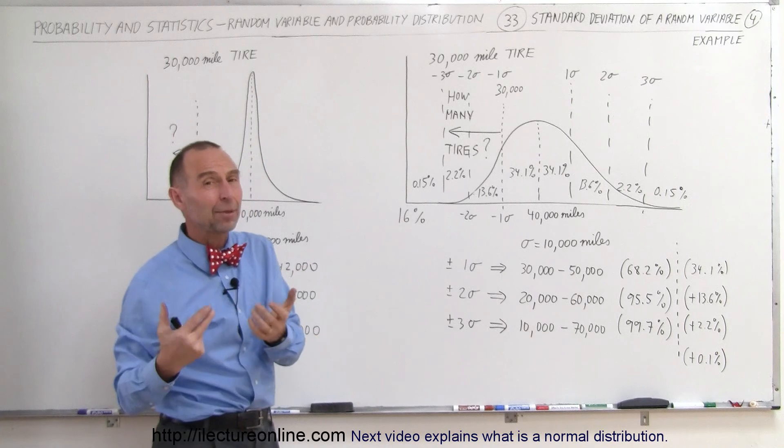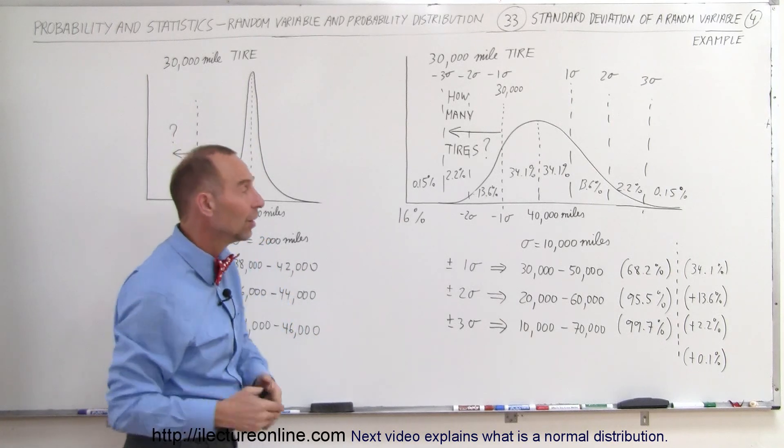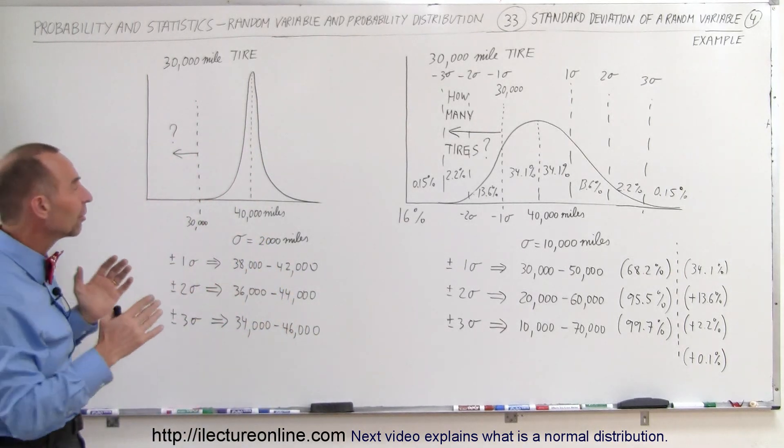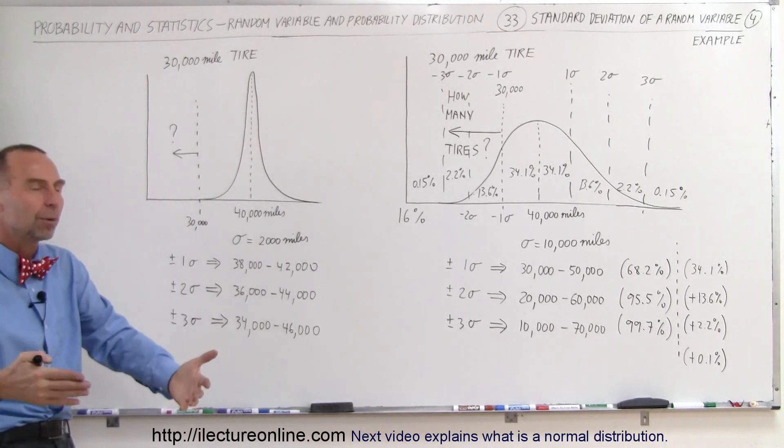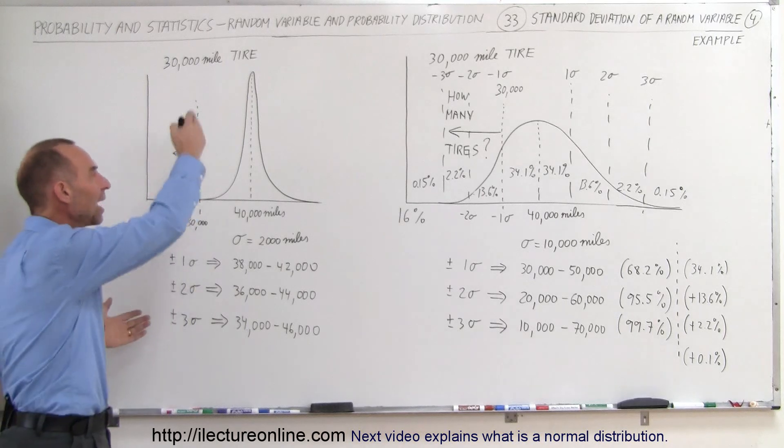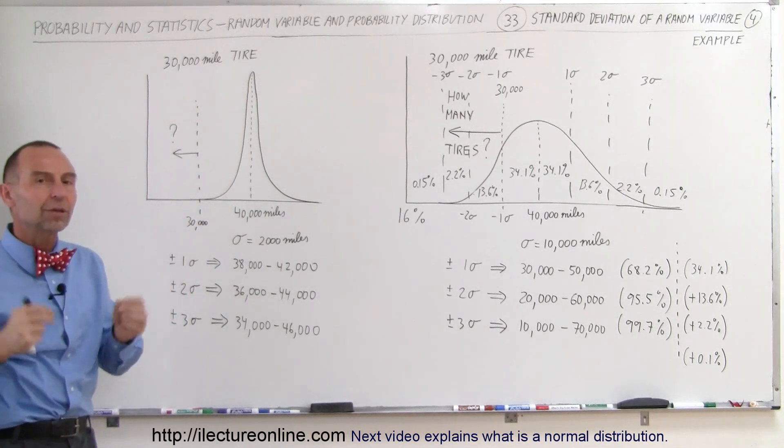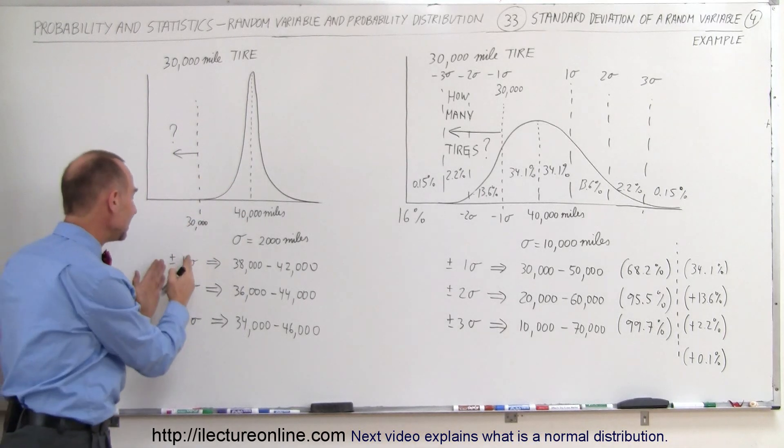And on top of that, you'll have unhappy customers that may not want to come back. So understanding your manufacturing process, understanding the amount of chips you put in a bag, how long, how many hours a light bulb lasts, by graphing out the distribution of the variable that you're looking for, by understanding the sigma, the standard deviation and how big or how small it is and how that shows the variation in your process,